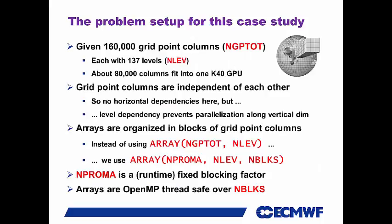The problem setup is such that, unlike last year, I'm now running with 160,000 grid point columns. Looking at the global map, we have this structure with 137 levels, and about 80,000 columns fit into one K40 GPU. So even with one GPU, we have to do two passes to run through 160,000 grid points. The K40 has about 11 gigabytes of usable memory.